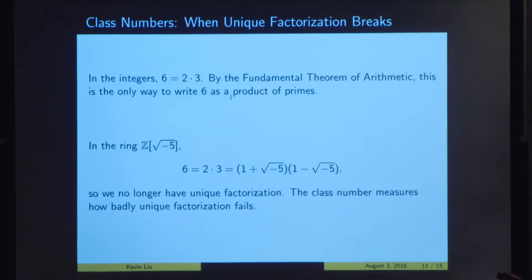So we have no analog of the fundamental theorem of arithmetic. And what the class number measures is how far we are from having any sort of unique factorization. So in the integers, since we do have unique factorization, the class number is just 1. In this example, we don't, and the class number is 2. And in general, the higher the class number, the further you are from having unique factorization.